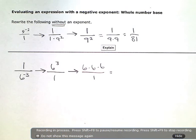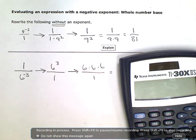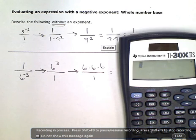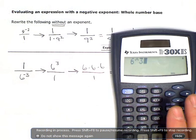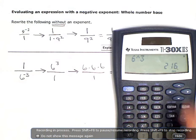And I'll just put that in my calculator here. 6 to the third, or 6 times 6 times 6, however you want to punch it in, 216.